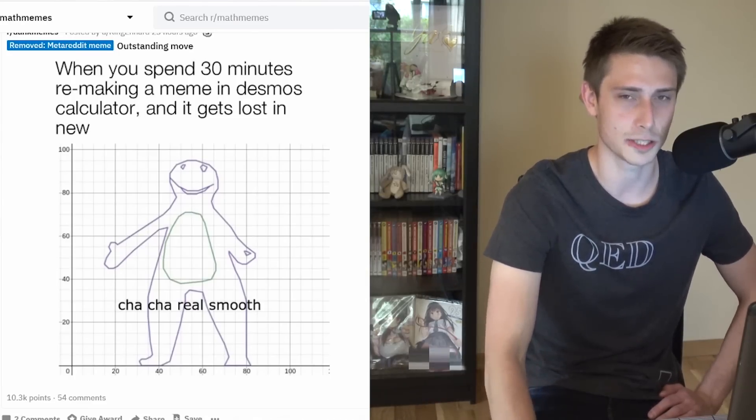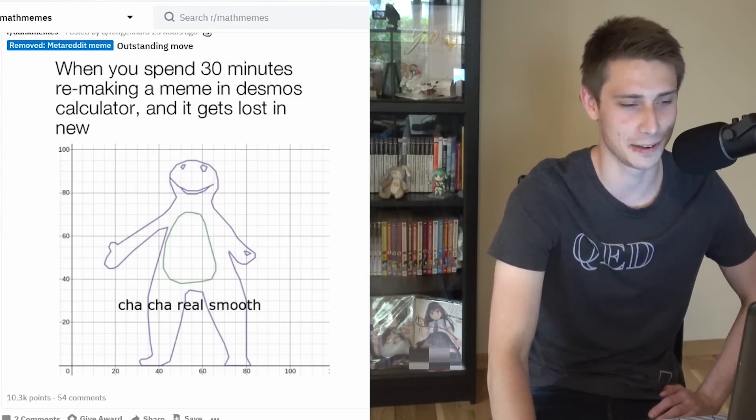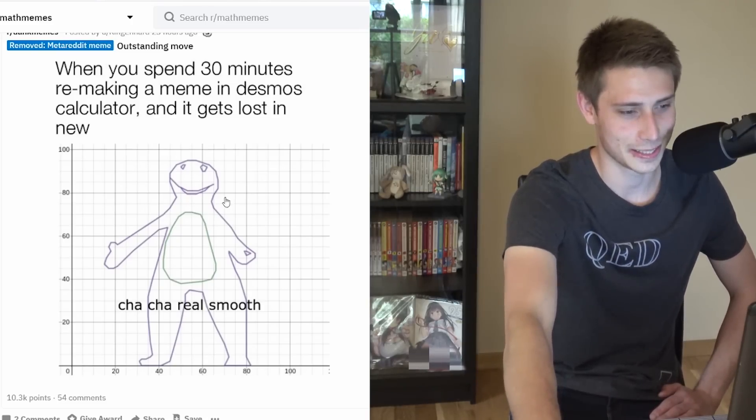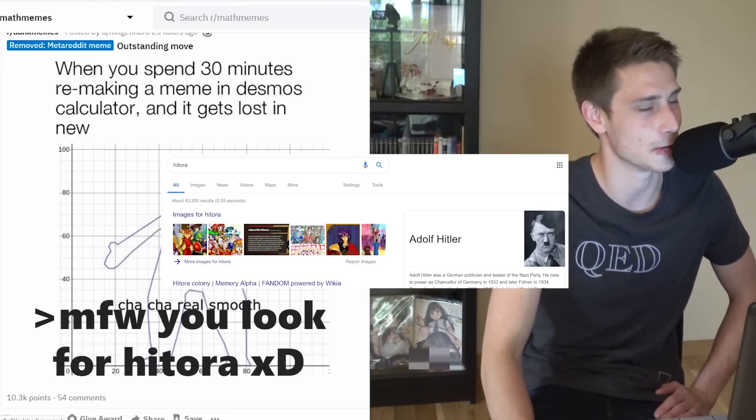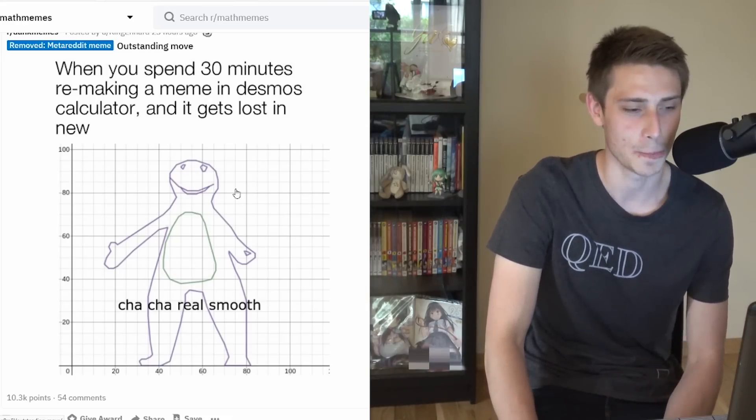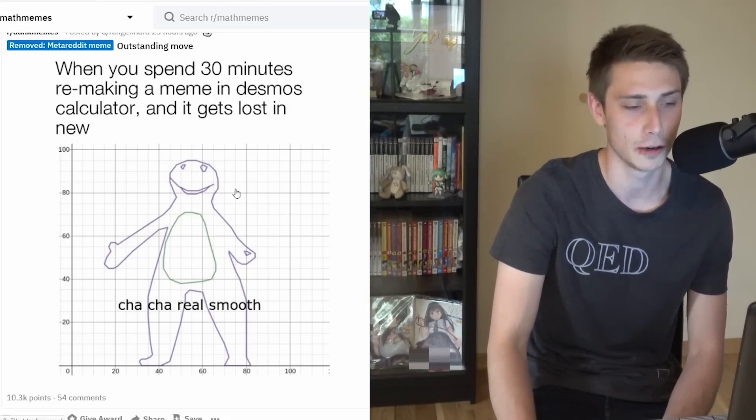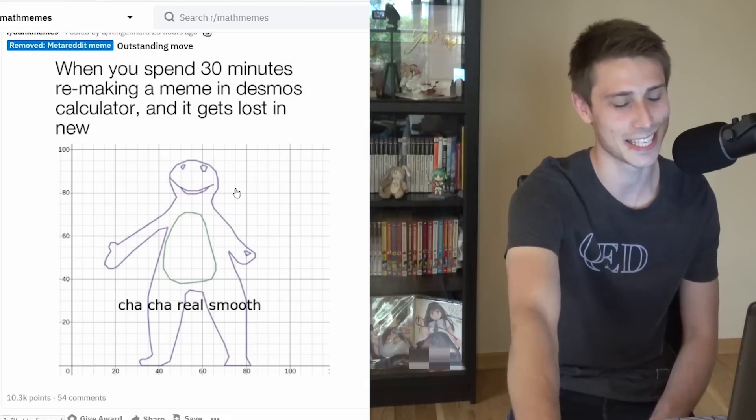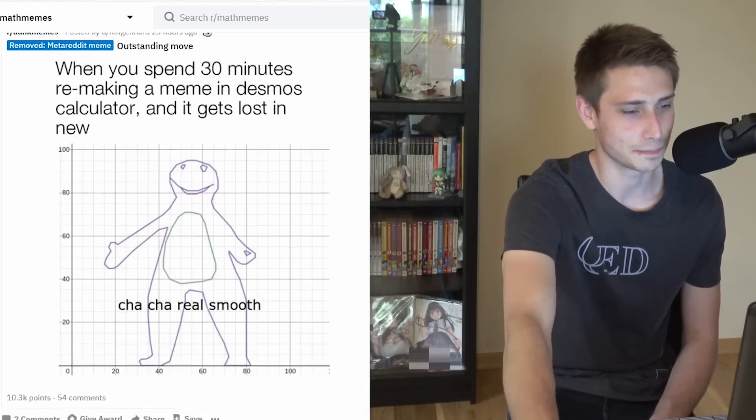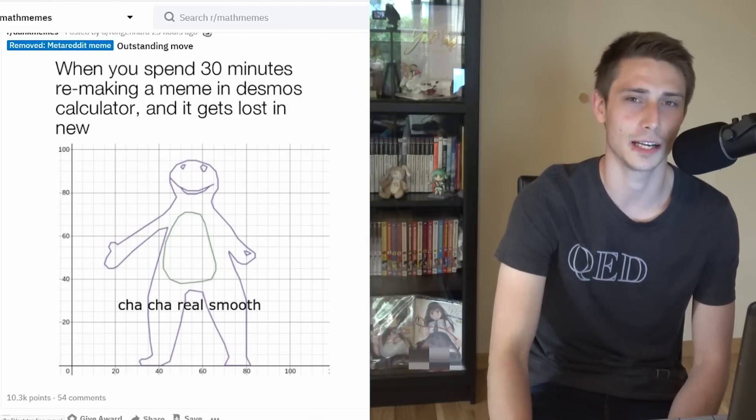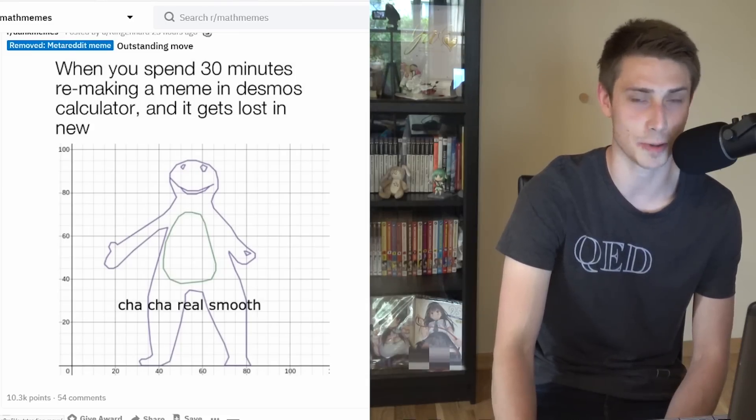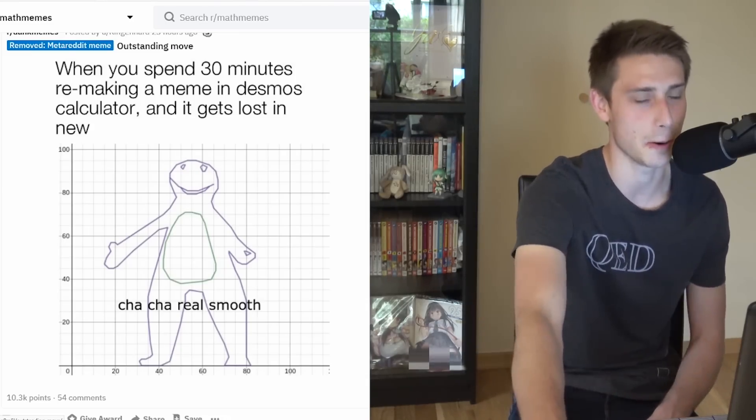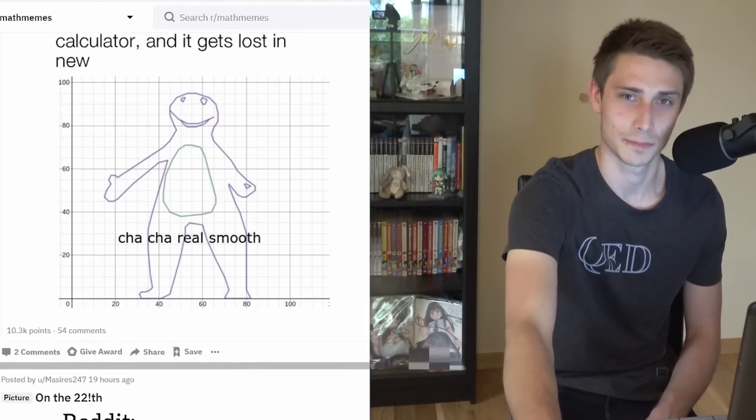When you spend 30 minutes remaking a meme in Desmos calculator and it gets lost in new. Cha-cha real smooth. I really like when you go to Wolfram Alpha and you type in plot of Hitori-chan, best waifu overall. It's quite fun that you can even get a 3D curve of a cow from Wolfram Alpha. I've never actually created a meme in Desmos. Props to the guys who actually do this.